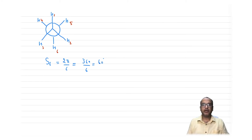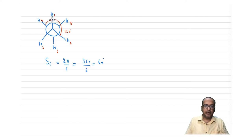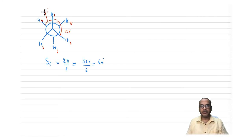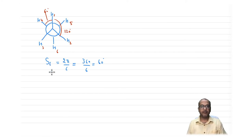The full angle between two hydrogens on one carbon is 120 degrees, but the dihedral angle between front and back hydrogens is 60 degrees. So we will be doing a 60-degree rotation. We could also check for an S3 axis, but let us proceed with S6.